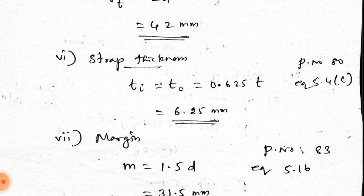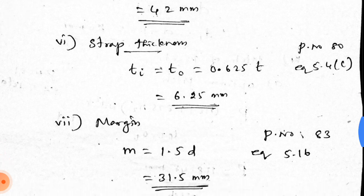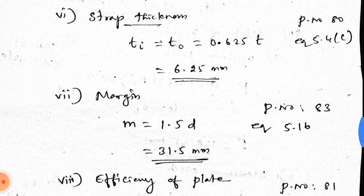The sixth step is strap thickness. For a double cover butt joint, the formula is t_i = t_o = 0.625 × t, from page 80, equation 5.4c. Substituting t = 10 mm, the strap thickness is 6.25 mm.